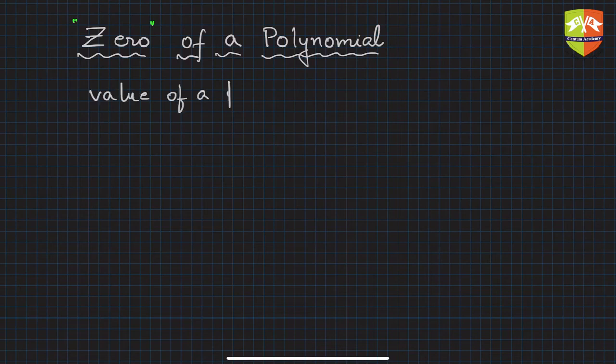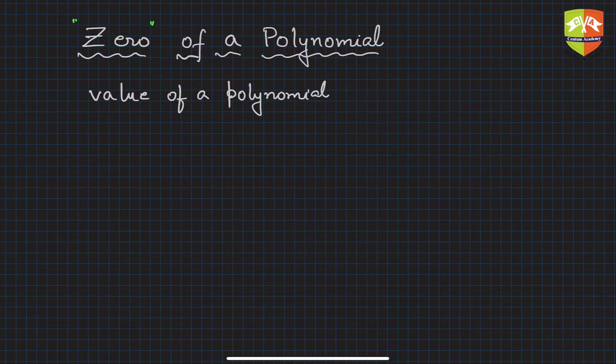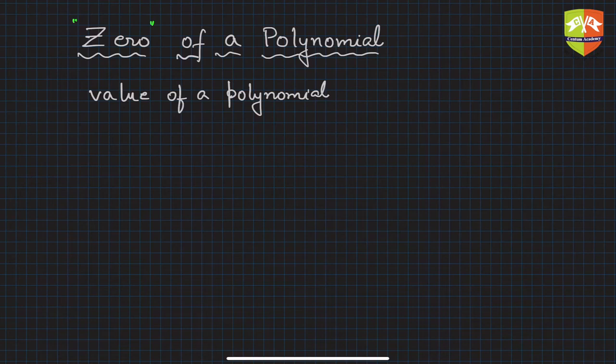We studied the value of a polynomial, wherein we used to substitute the variable with a fixed value and calculated the entire value of the given polynomial. So let us take an example again and try to understand once again what the possible values of a polynomial could be, and then it will be automatically understood what a zero of a polynomial is.